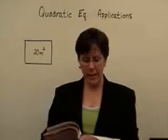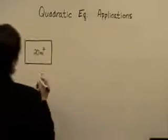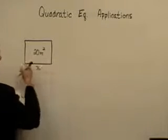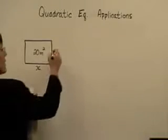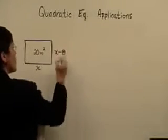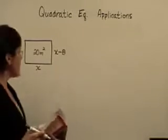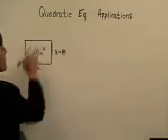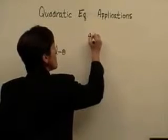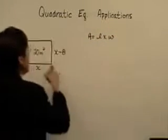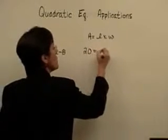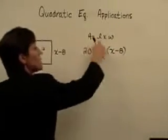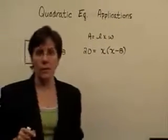The width of a rectangular feedlot is 8 meters less than its length. Whenever they compare something to the length — I'm going to call this the long side — then I let x represent that. They said the width is 8 meters less, so I'll represent that side with x minus 8. I'm going to use what I know about area for a rectangle: the area of a rectangle is found by taking length times width. The area is 20, the length is x, the width is x minus 8.